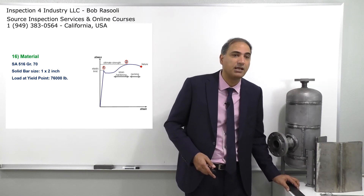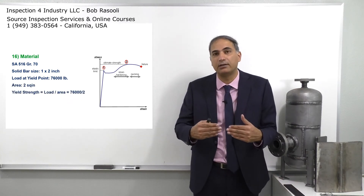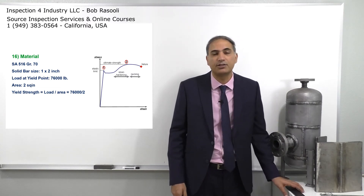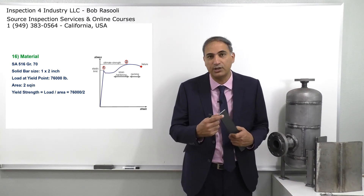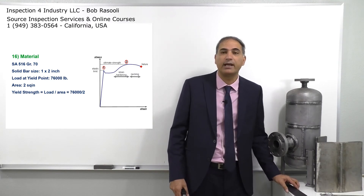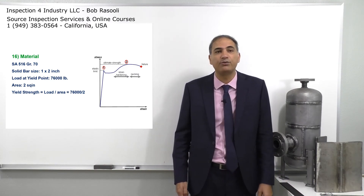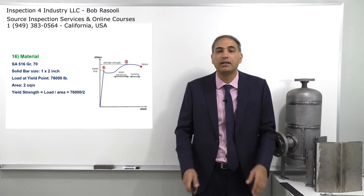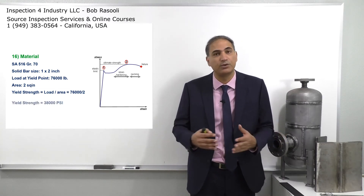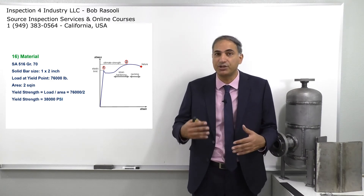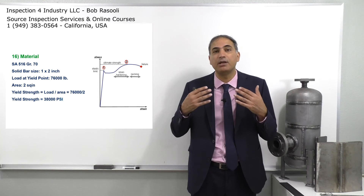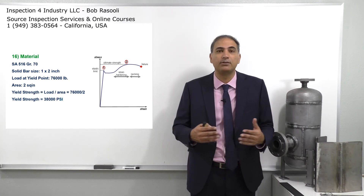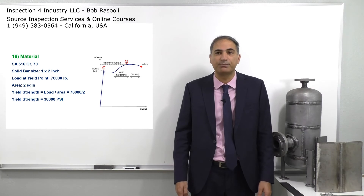The machine shows a load of 76,000 pounds at the yield point. To convert this to stress, you divide force by area — stress equals force over area. Our area is two square inches (two inches times one inch). Dividing 76,000 pounds by two square inches gives us 38,000 psi. This is how the machine calculates yield strength — it measures the load, and we divide by area to get 38,000 psi.